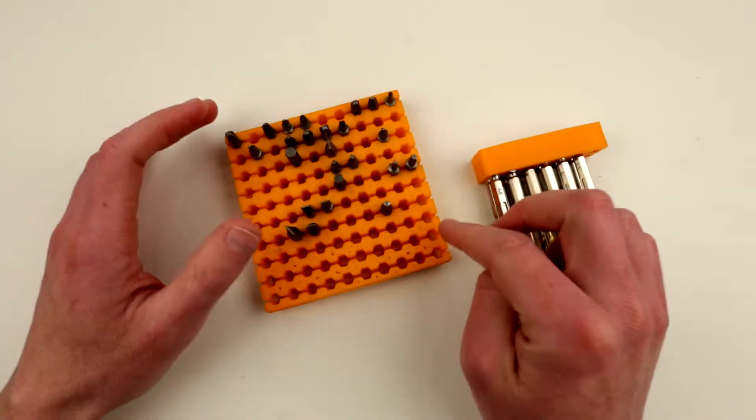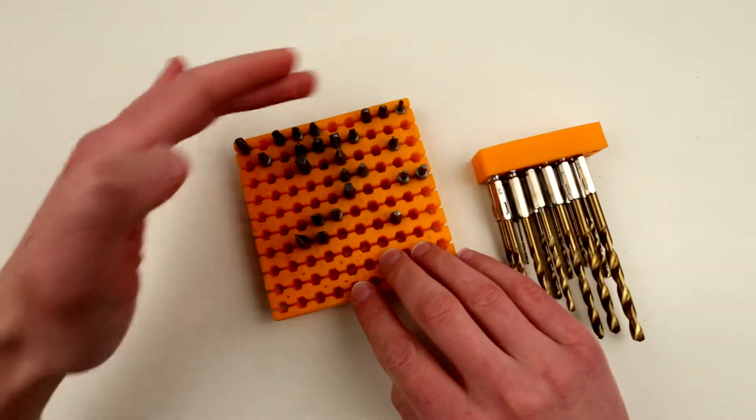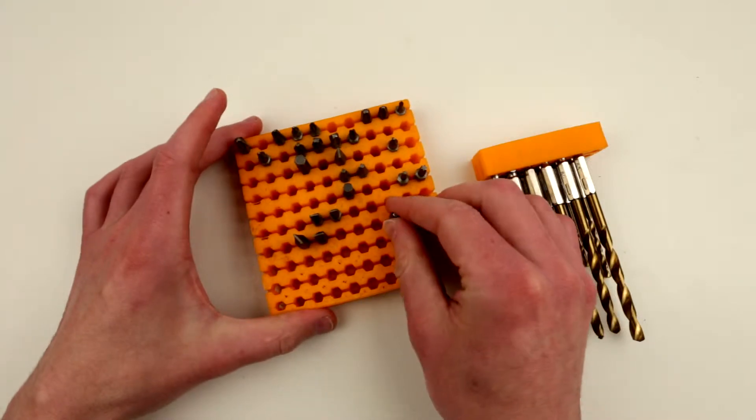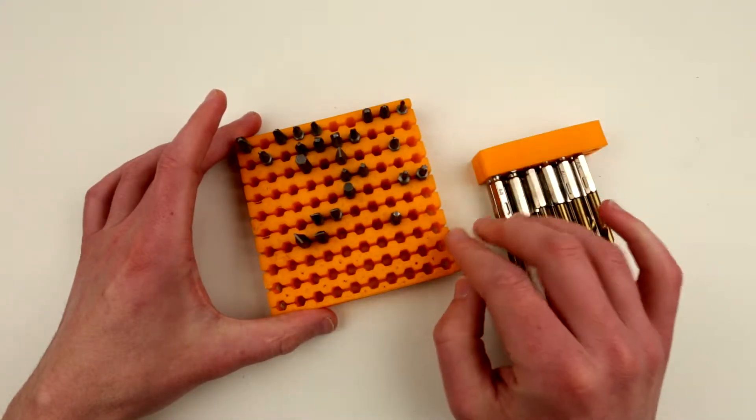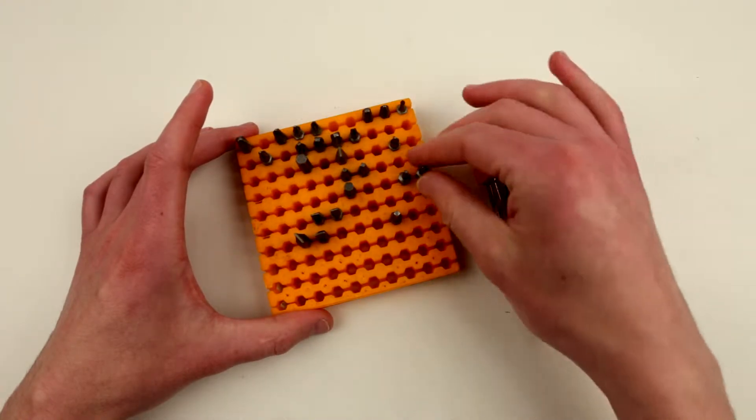As you see, this one is a 10 by 10 array and I organized my bits by type. So here's Phillips, here's flats, here's Robertson, hex over here, and torques.